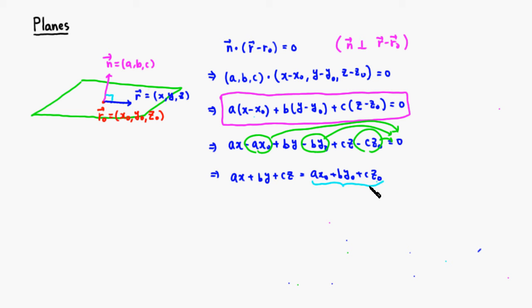I'm gonna call it D. So another way to write the equation of a plane would be ax plus by plus cz is equal to D, which is the same thing as ax0 plus by0 plus cz0. So this is just